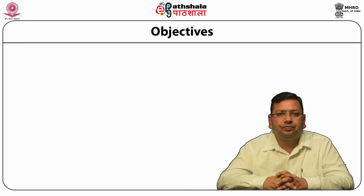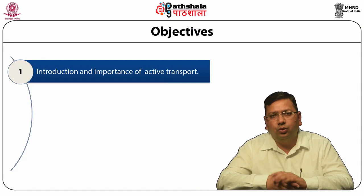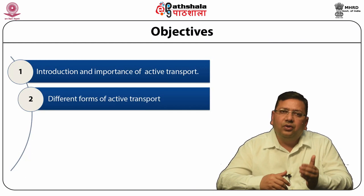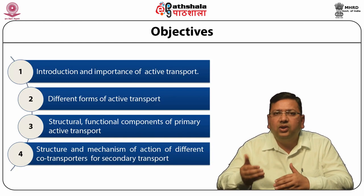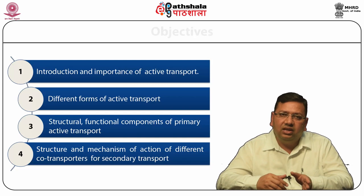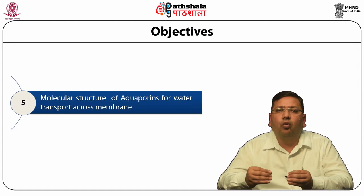Firstly, the introduction and importance of active transport; then different types of active transport; then we will proceed towards structural and functional components of primary active transport. Simultaneously we will go for structure and mechanisms of action of different co-transporters for secondary transport, and lastly we will talk about molecular structures of aquaporins for water transport across membranes.